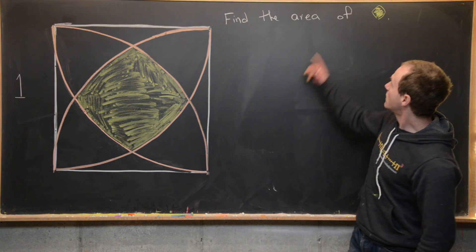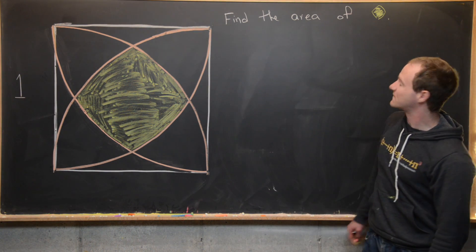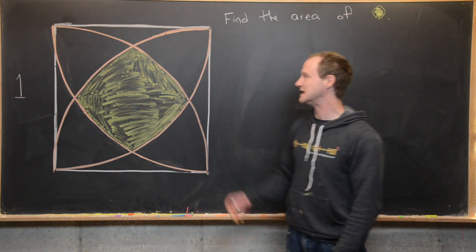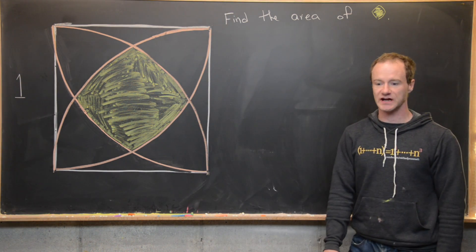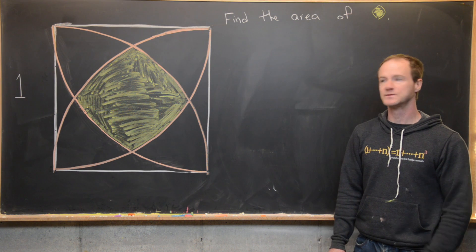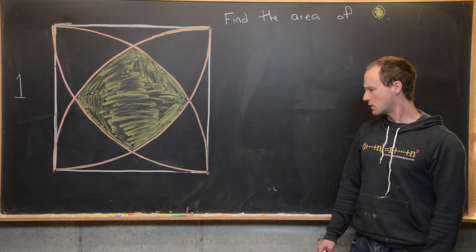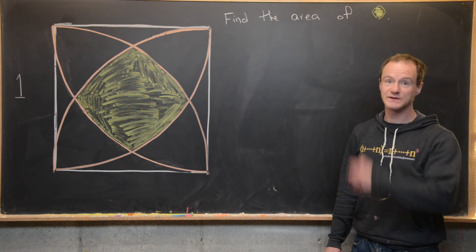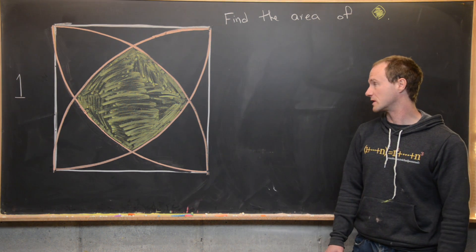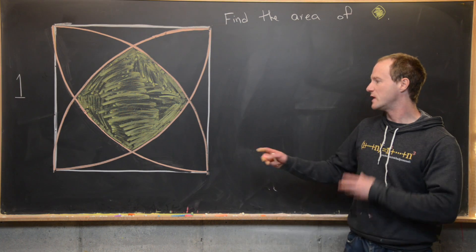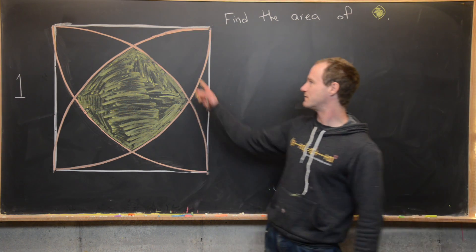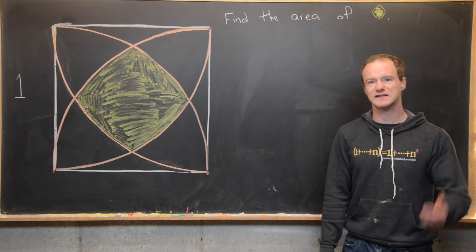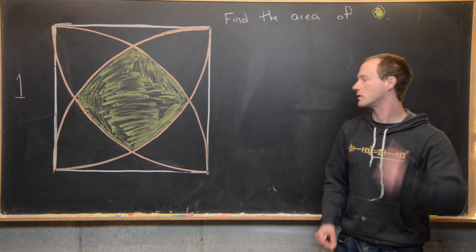What we want to do is find the area of the yellow shaded region. First, we'll put this in the coordinate plane, find some intersection points, and then set up an integral.